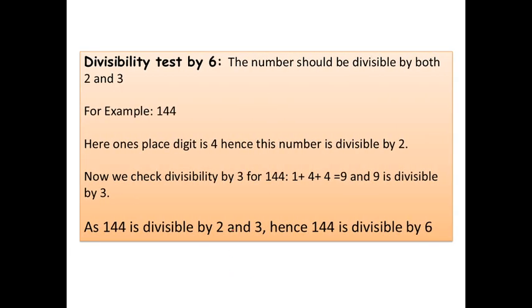Now, let us see the divisible test by 6. The number should be divisible by both 2 and 3. For example, 144. Here, 1's place digit is 4. Hence, this number is divisible by 2. Now, we will check the divisible by 3 for 144. 1 plus 4 plus 4 is equals to 9. And, 9 is divisible by 3. As 144 is divisible by 2 and 3. Hence, 144 is divisible by 6.